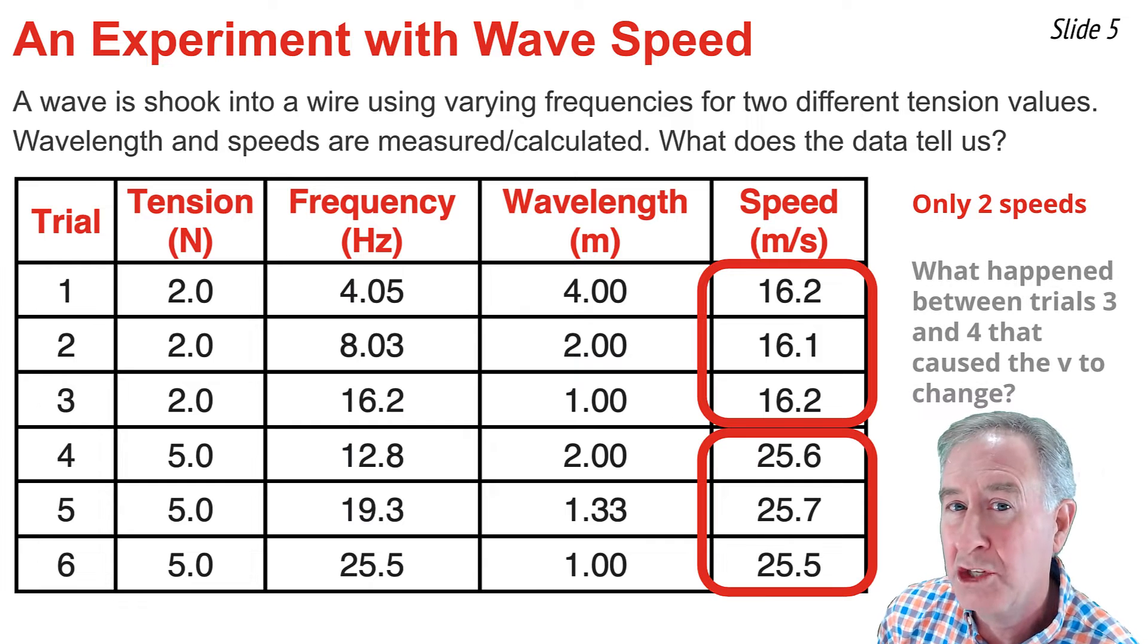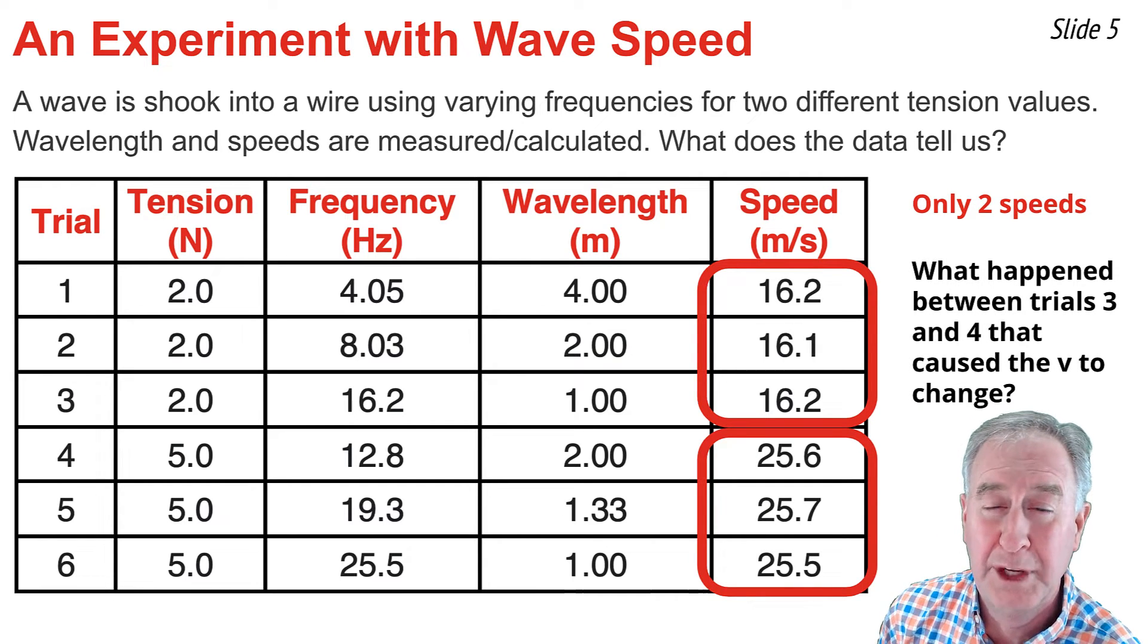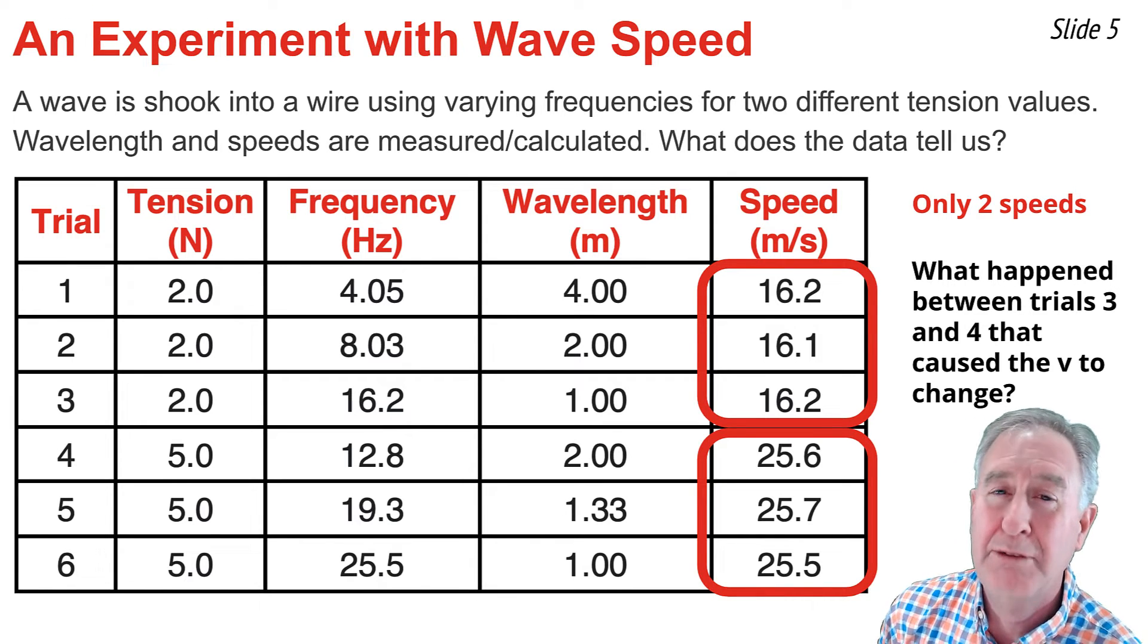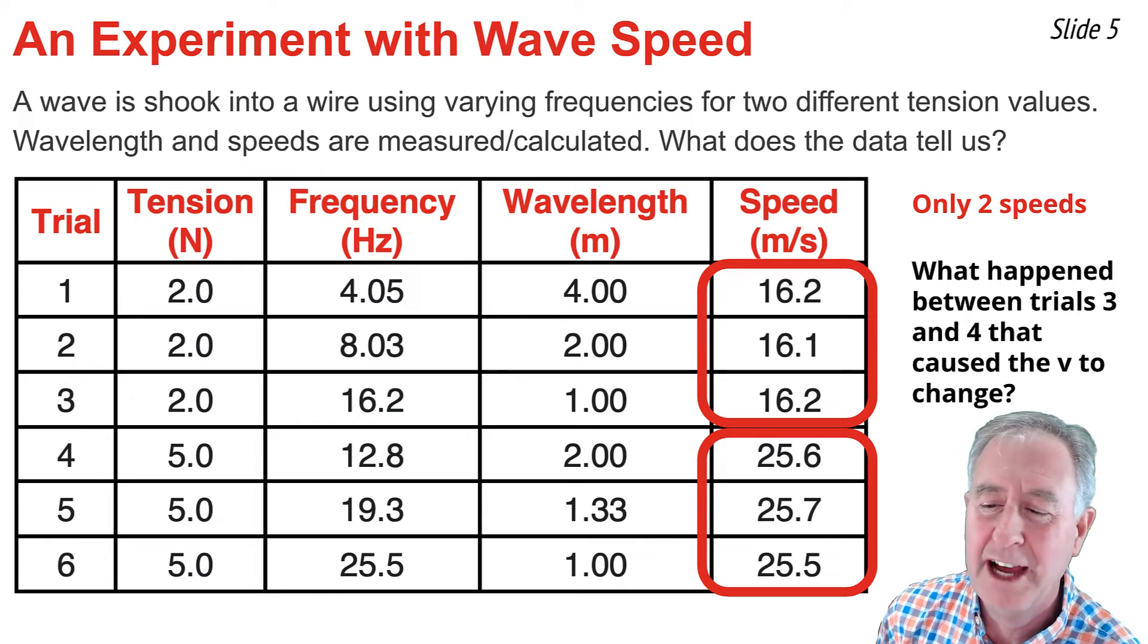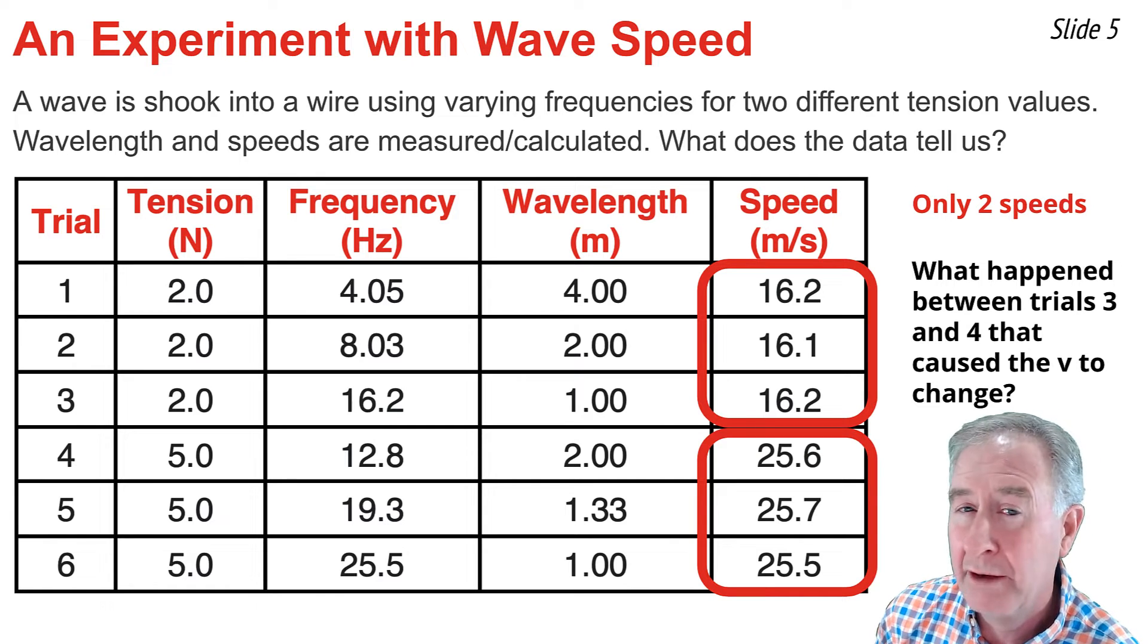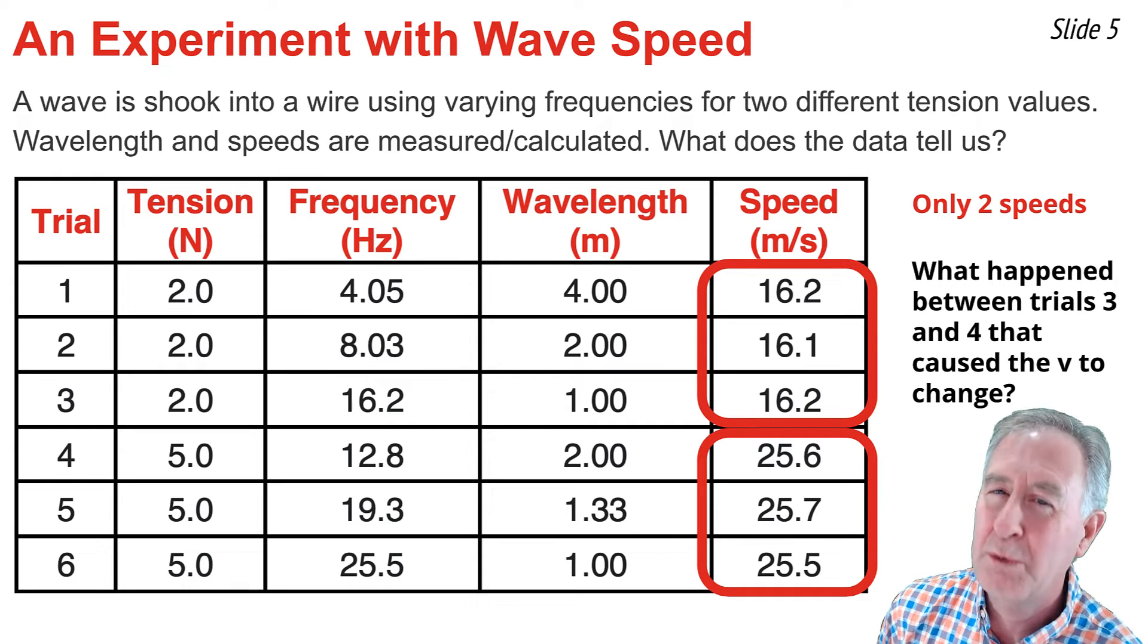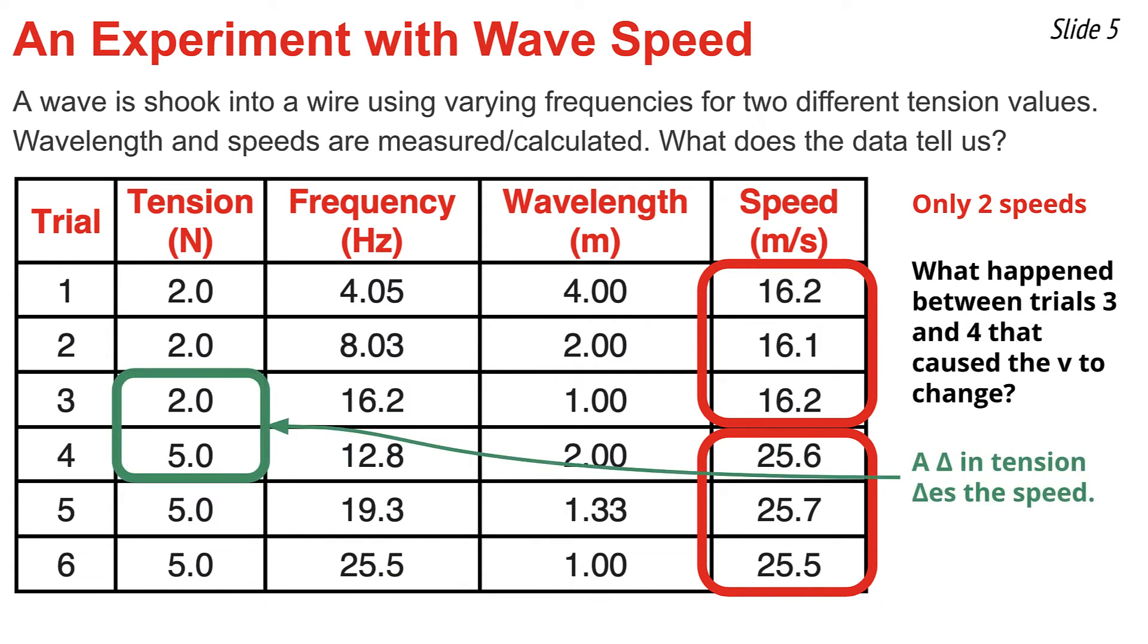But what is changing the speed values as we go from trial 3 to trial 4? What was changed to cause the dramatic change in speed from 16 to 25.6? Whatever it was, it wasn't being changed in row 1 and 3 and it wasn't being changed in rows 4 through 6. And if you look in the column labeled tension, you'll find the answer. Because the tension was changed from trial 3 to trial 4 from 2 newtons to 5 newtons, the wire was pulled tighter. And the change in the tension is what caused that change in the speed.